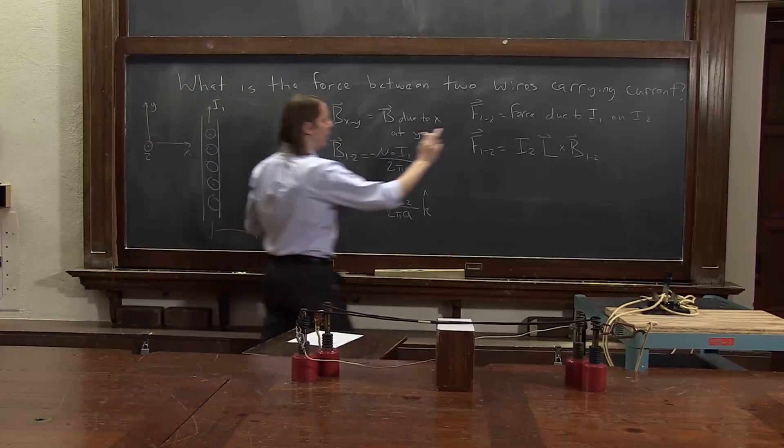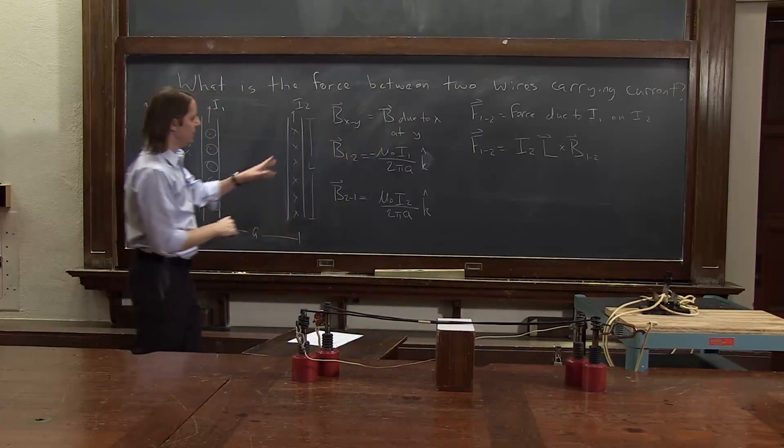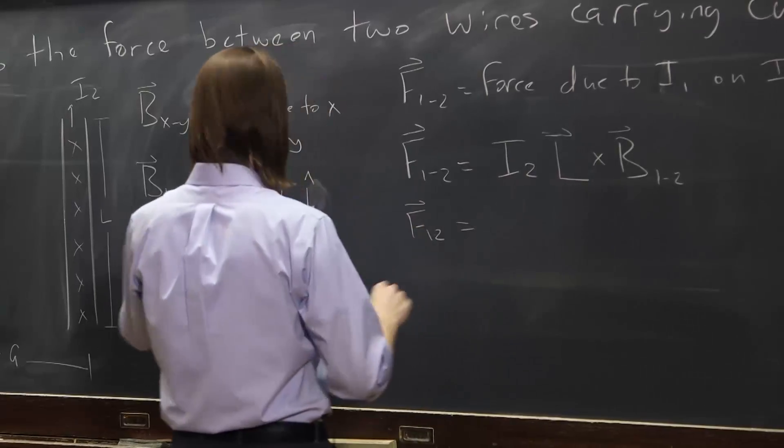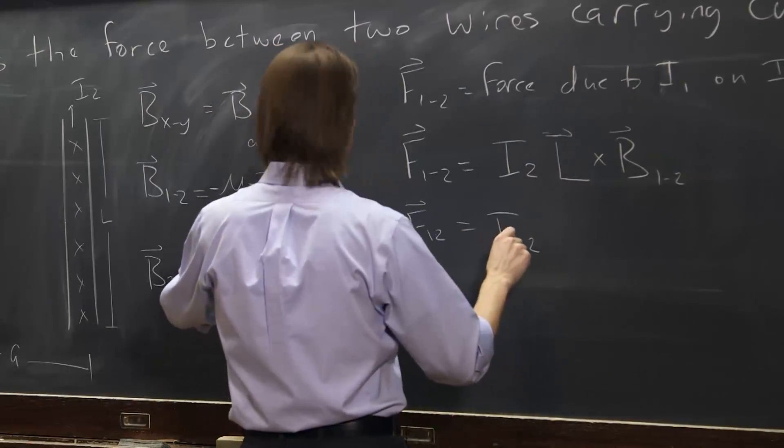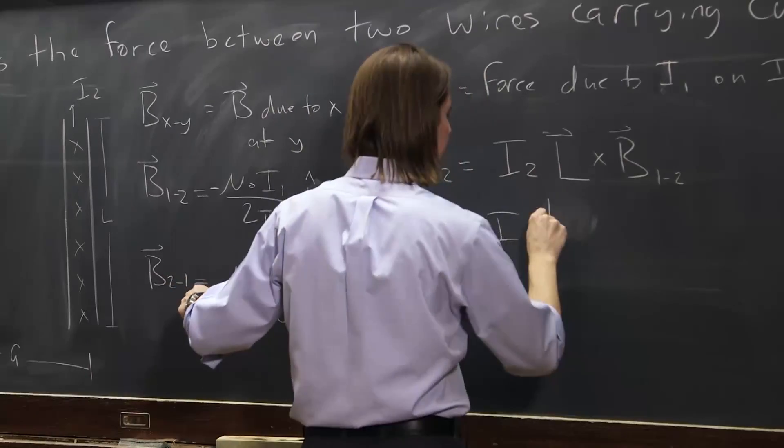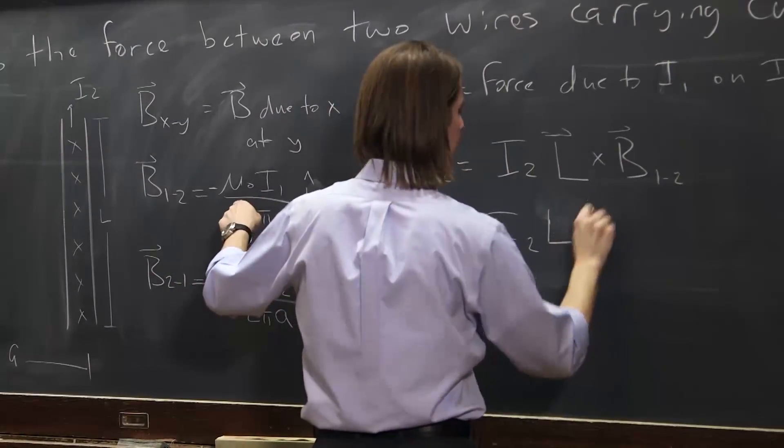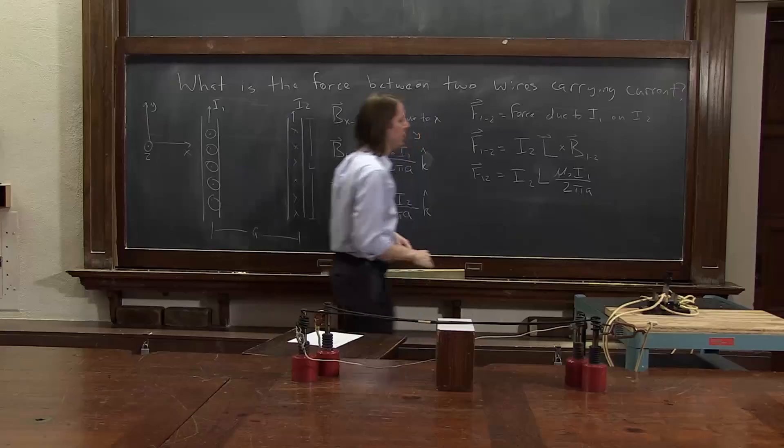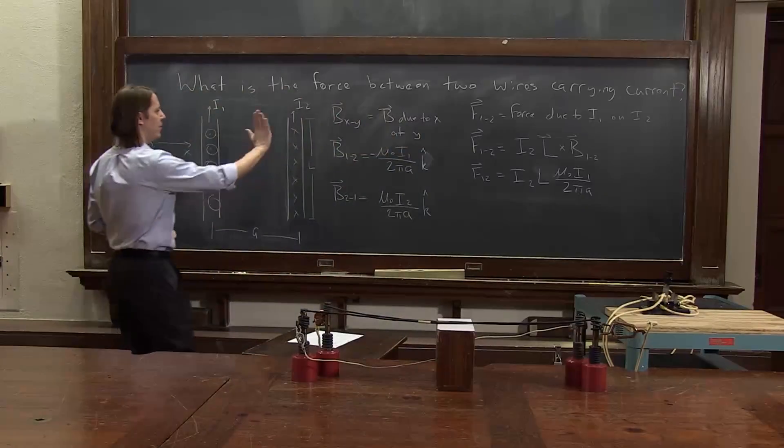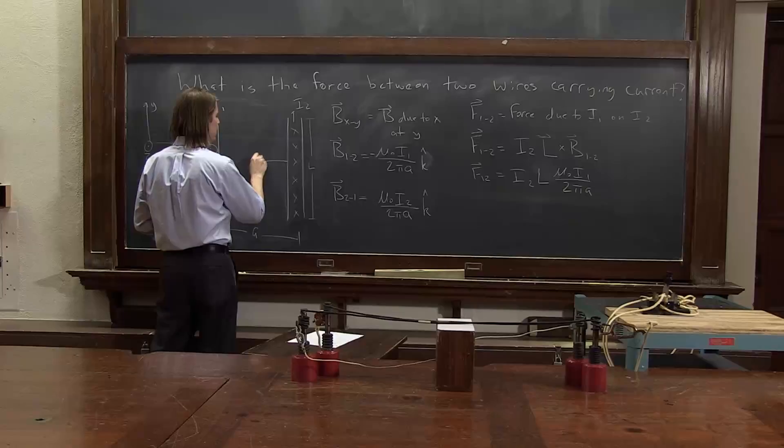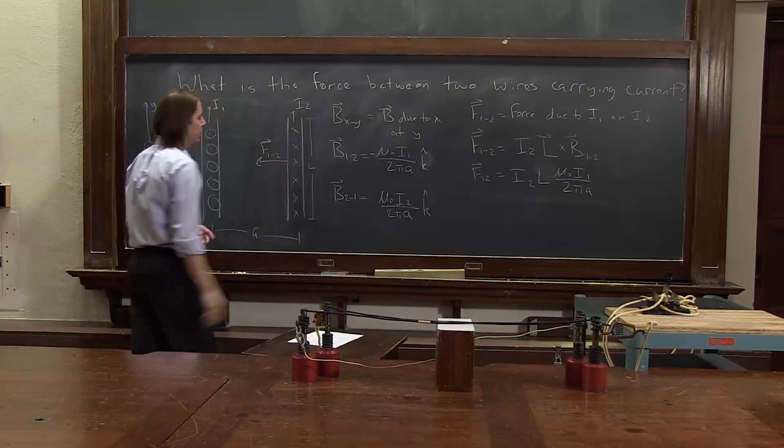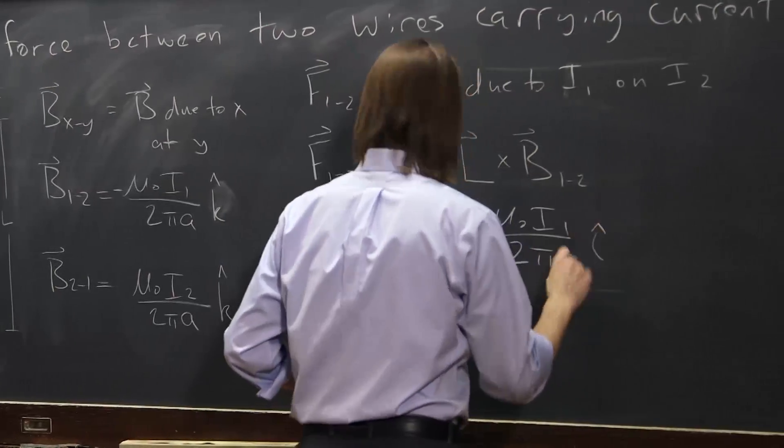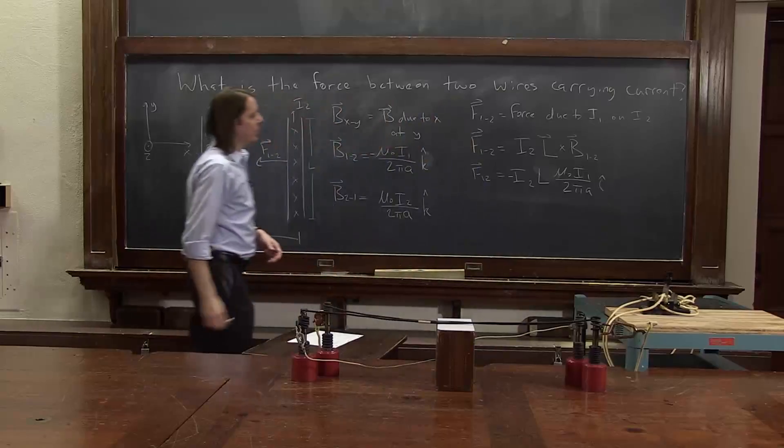So what we can do is plug in our value for B12 and figure out the direction. Let's see. So B12 is this. So F12 must then be i2 L, big L, mu naught i1 over 2 pi a. And now let's figure out what direction it must be. Let's see. L going along the current cross with B. It must be in. F12. Like that. So it's in the negative x direction. That's what I was thinking about before. It's in the x direction, and it's negative.